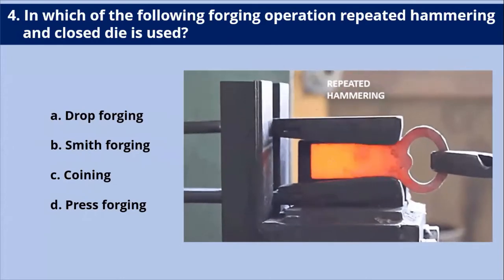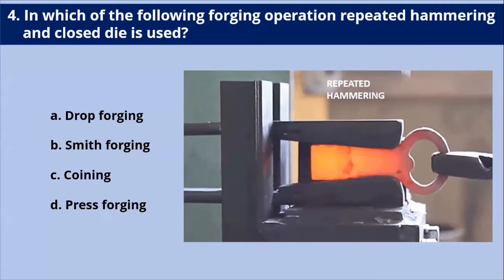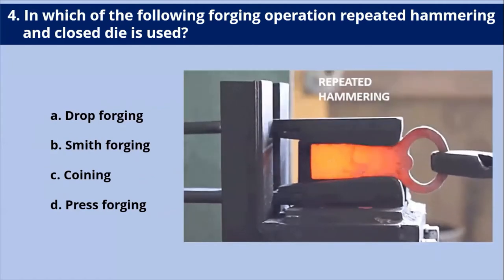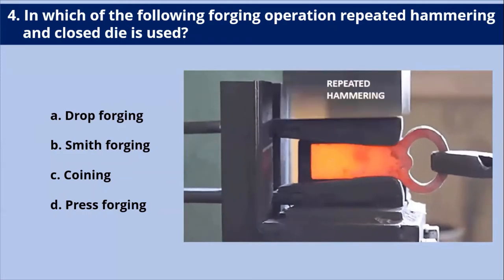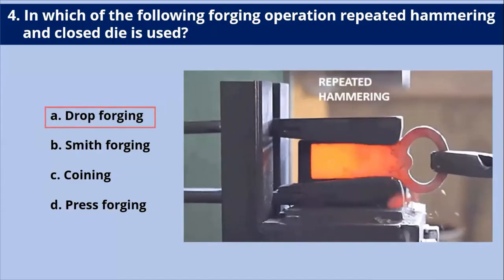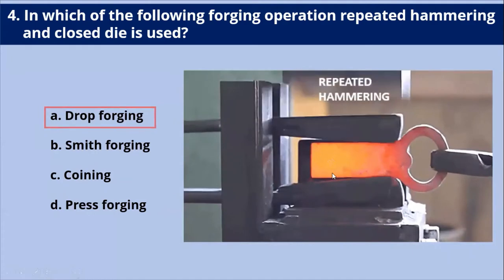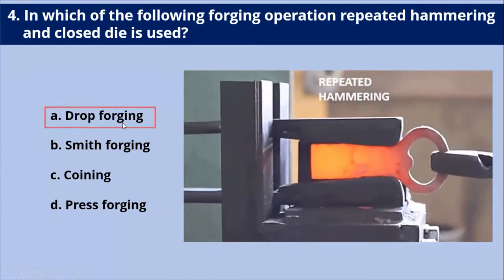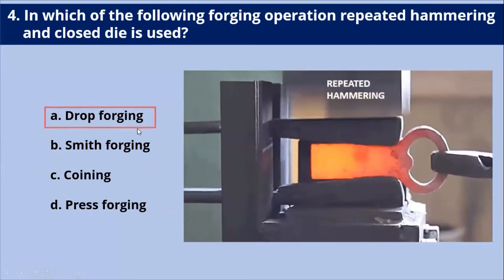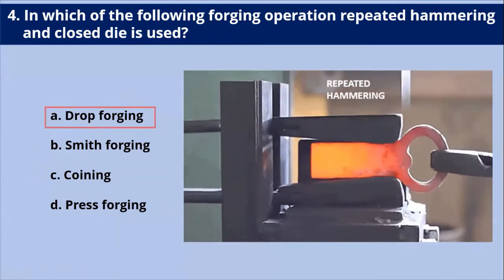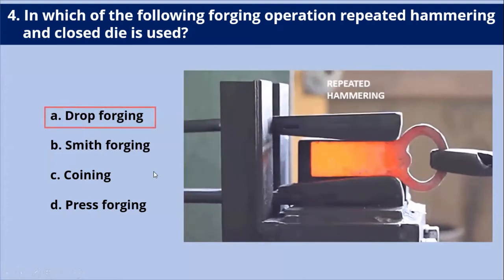In which of the following forging operations are repeated hammering and a close die used? Hammering forging is also called drop forging, where a hammer hits the work piece repeatedly to form its closed die — as we can see in this diagram. That's why our answer is drop forging: in drop forging, we give repeated blows over the component using a closed die.